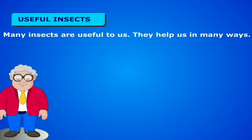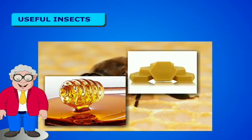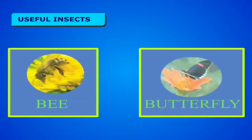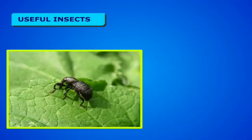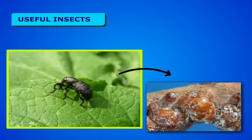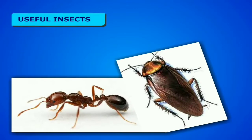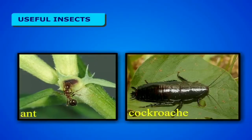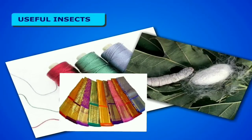Useful insects: Many insects are useful to us. Number 1: Honey bees produce useful substances like honey and beeswax. Number 2: Some insects like butterflies and honey bees carry pollen grains from one flower to another; thus they are called pollinating agents. Number 3: Lac insects give lac which is used in manufacturing of toys, paints, buttons and bangles; lac is also used as a sealing material. Number 4: Some insects like ants and cockroaches eat up dead plants and animals, thereby keeping the environment clean. We also get silk fibers from silkworms, which are used to make clothes such as saris.